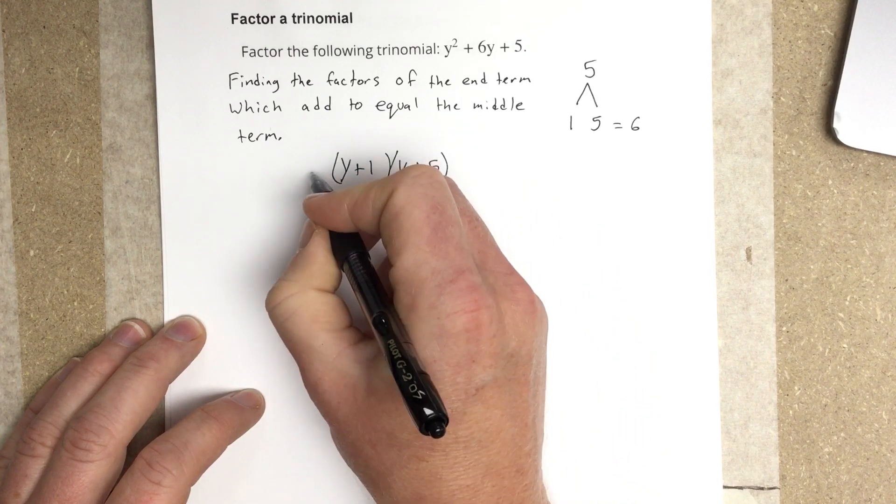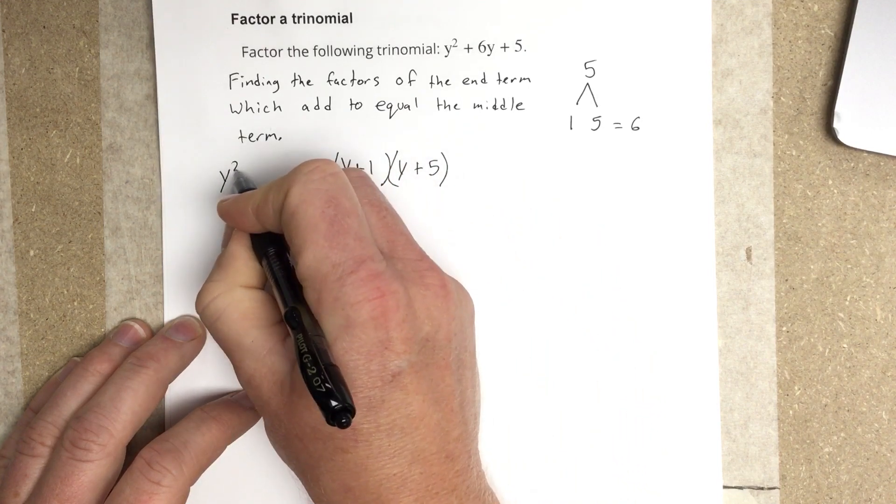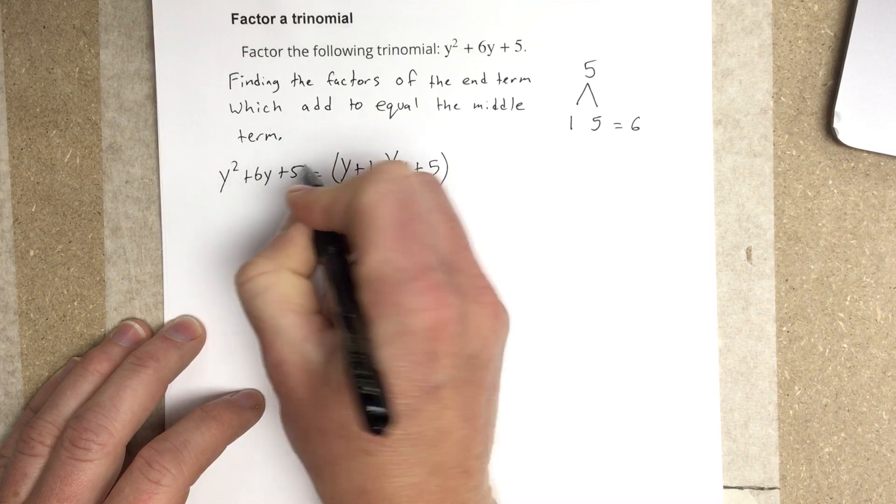And this is the factored form for this expression, y squared plus 6y plus 5. They're equal to each other.